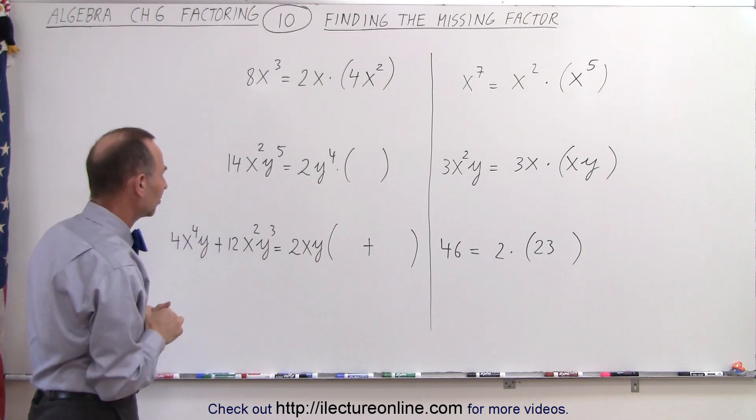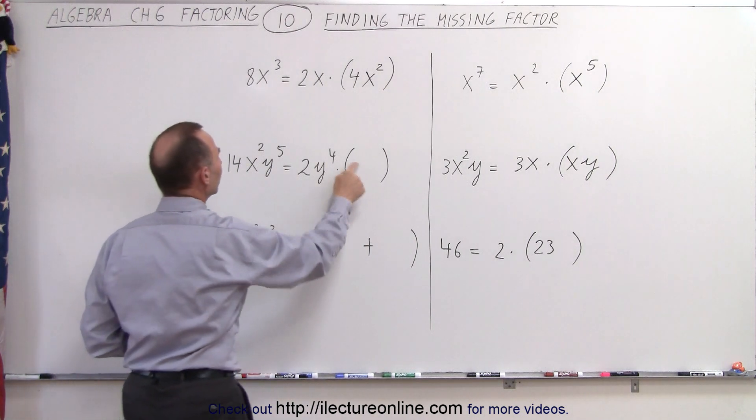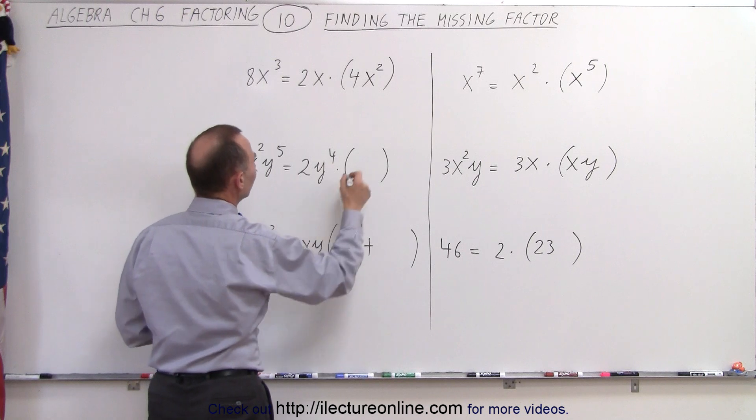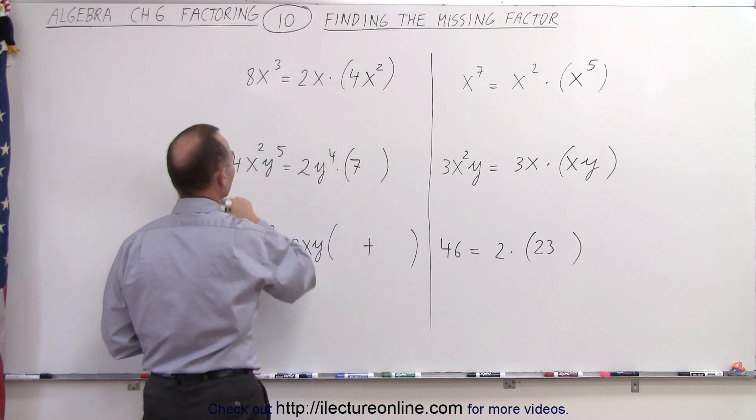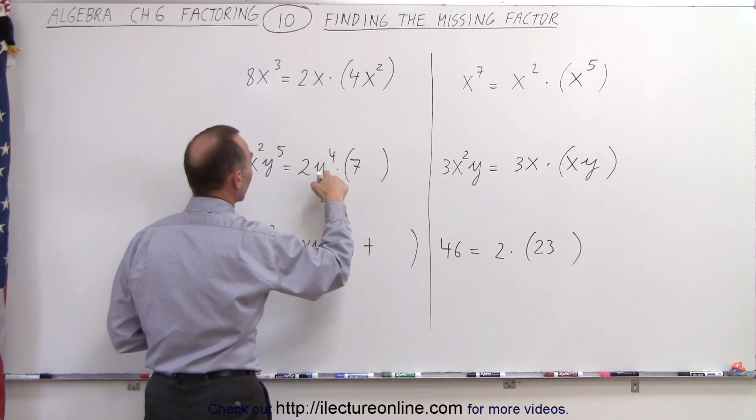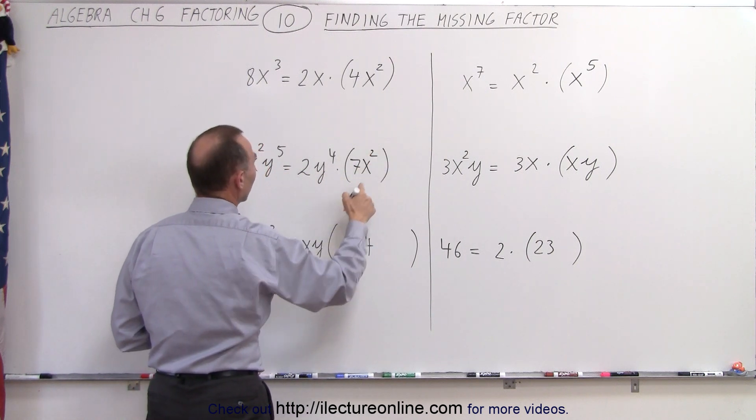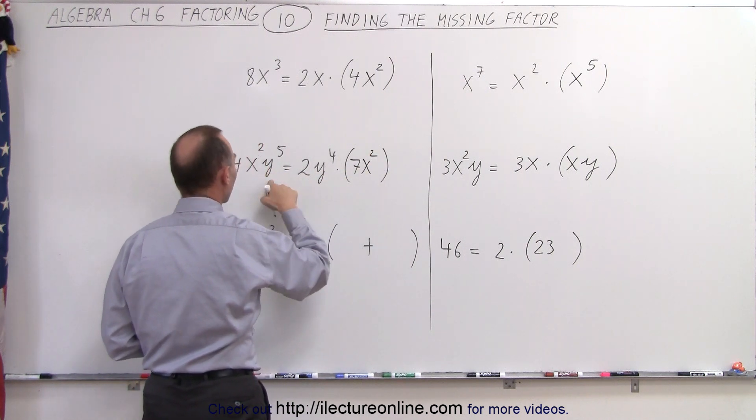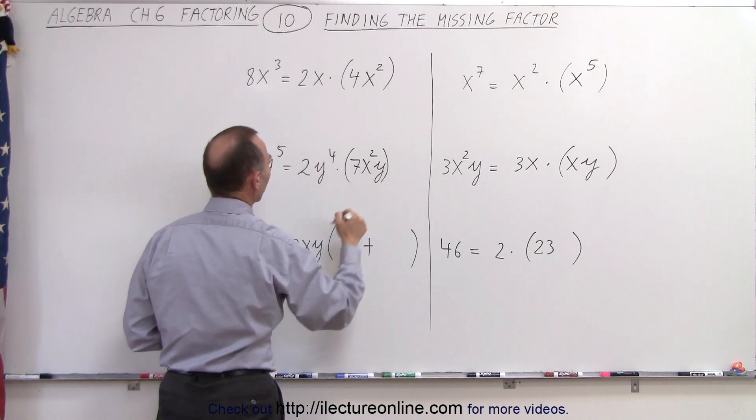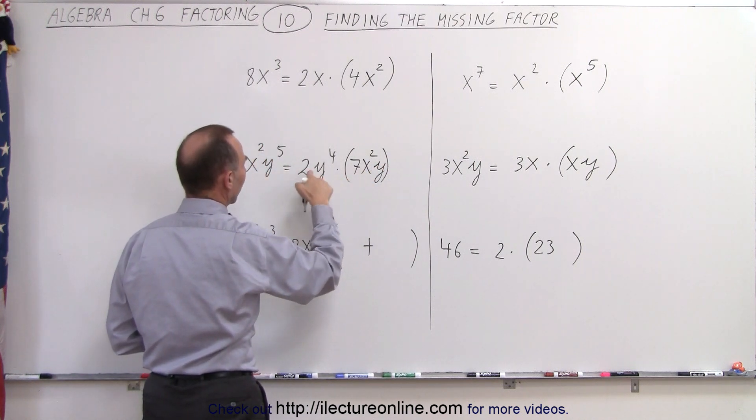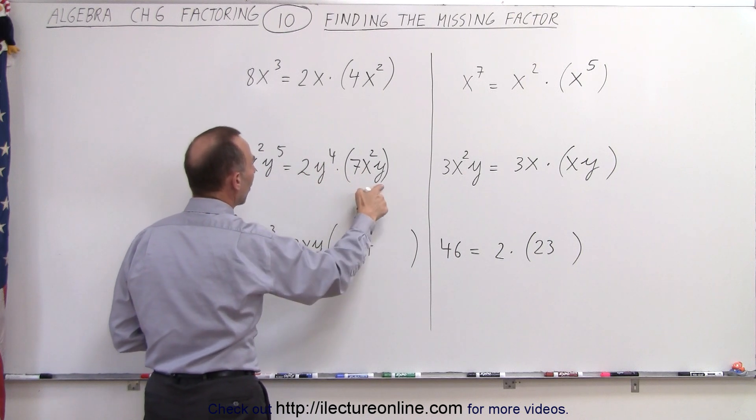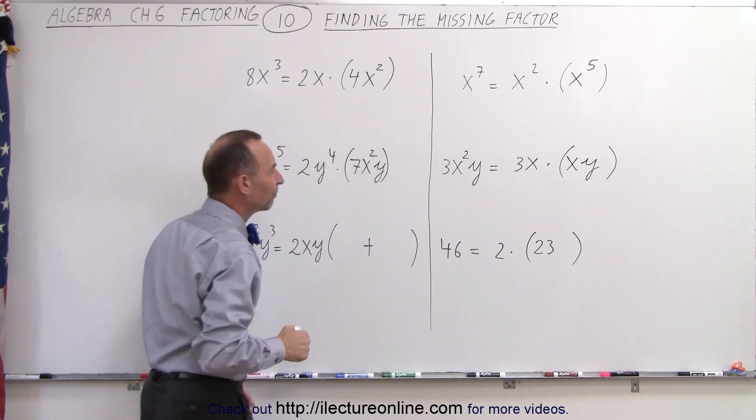So let's try that on our next exercise. What times 2 gives me 14? Well, that would be 7. What times 1 gives me x²? Well, that would be x². And what times y^4 gives me y^5? Well, that would be y. So 7 times 2 is 14, x² times 1 is x², and y times y^4 is y^5.